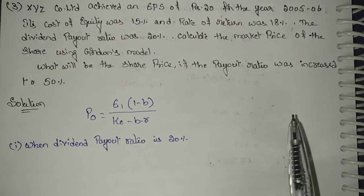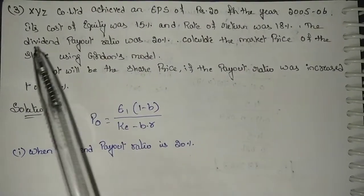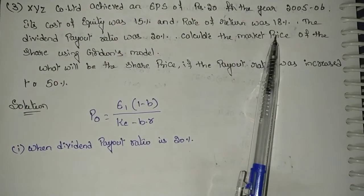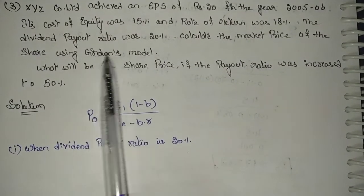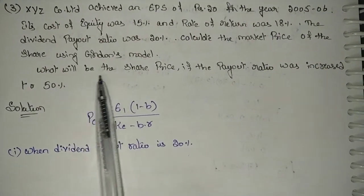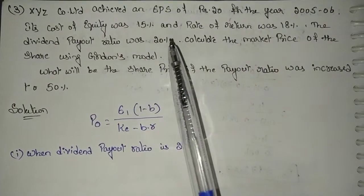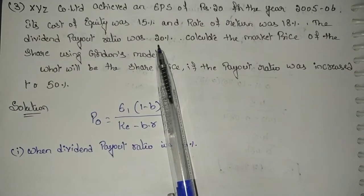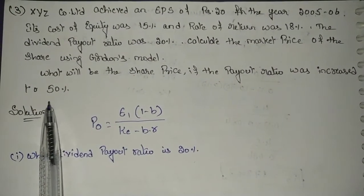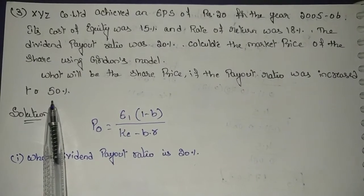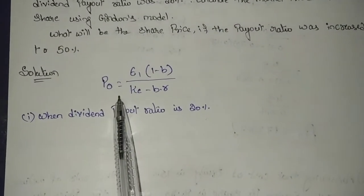Now let us explain Gordon's Model using one more example. XY Limited achieved an EPS of rupees 20 for the year 2005-06. Its cost of equity was 15% and the rate of return was 18%. The dividend payout ratio was 20%. We need to calculate the market price of the share using Gordon's Model, and also find the share price if the payout ratio is increased to 50%.